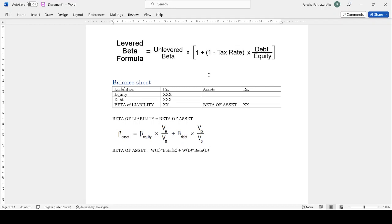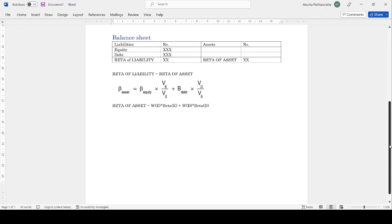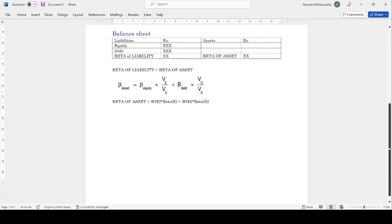Whenever beta of debt is given, we prefer this formula: beta of asset equals weight of equity times beta of equity plus weight of debt times beta of debt.